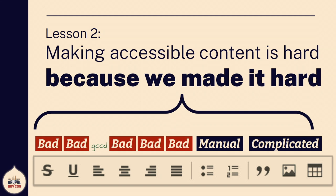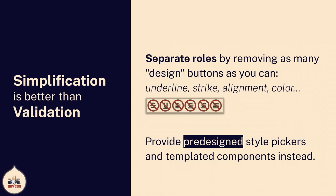Lesson two: making accessible content is hard because we made it hard. We made our tools before accessibility was a thing, and we haven't rewritten them yet. If you look at the typical CKEditor toolbar, it can be summarized as: bad, bad, good, bad, bad, bad, bad, manual, and complicated. There's the option for strikethrough text — strikethrough at the moment isn't read by screen readers, so if you cross out '10:15' and write '9:15,' the screen reader's gonna say both times and they'll miss your talk. Underlines are bad. Left-aligned text — hey, that's good. But why do you need that option? Because every other option is problematic. Simplification is better than validation — wherever possible, just get rid of something if you can. Provide pre-designed style pickers, template components. I'd rather Editoria11y doesn't fire than that you're happy your checker found something.